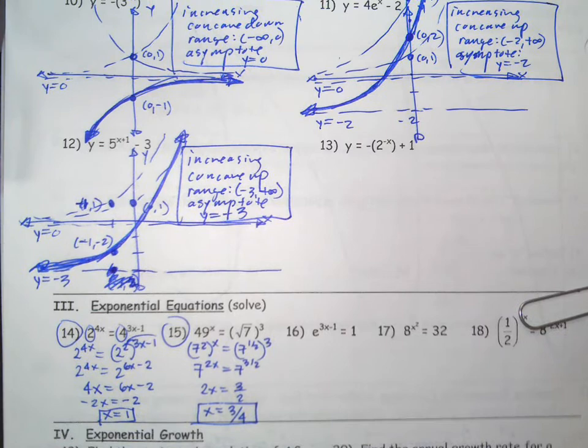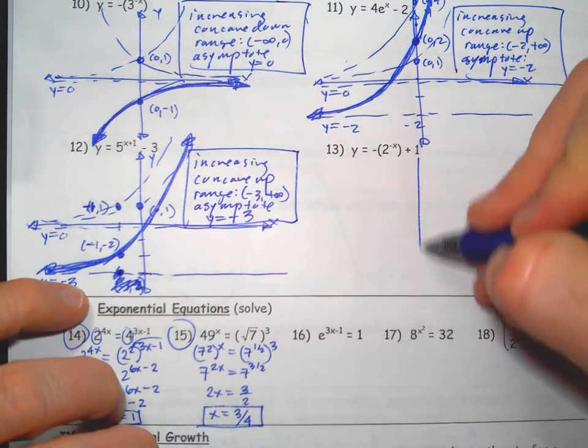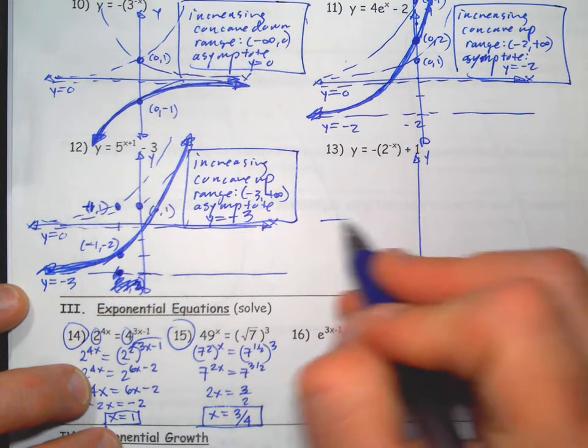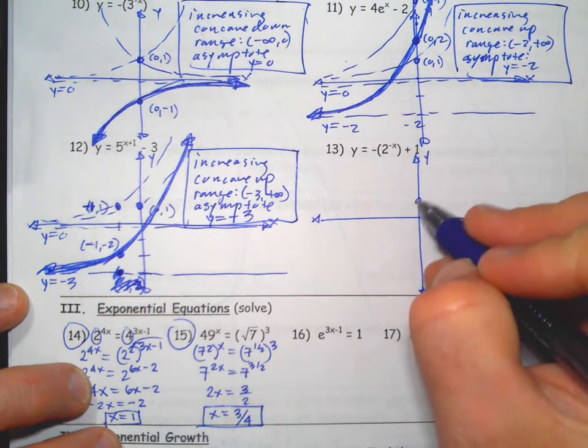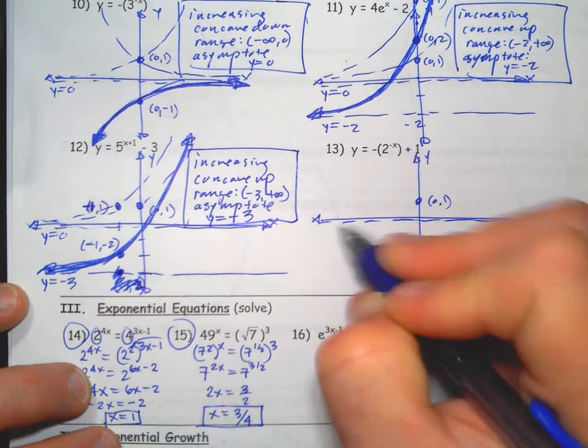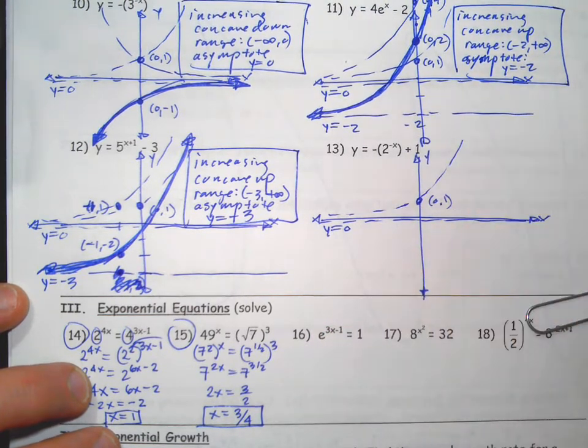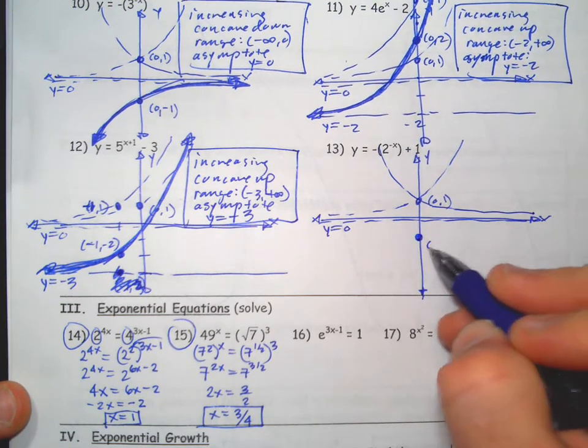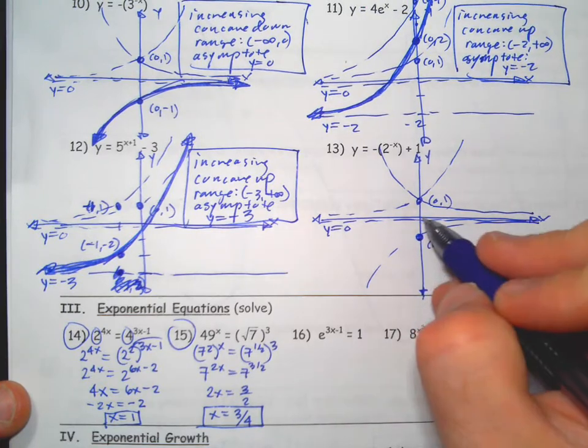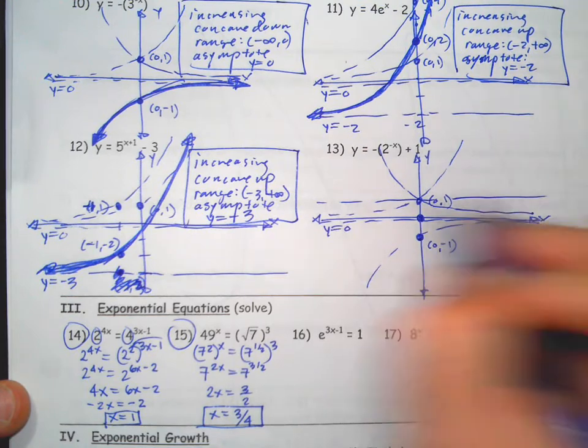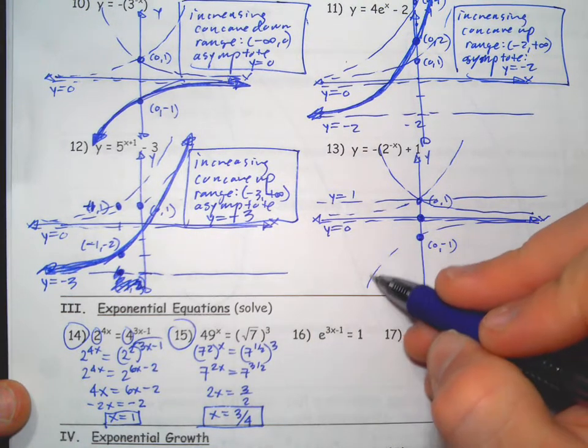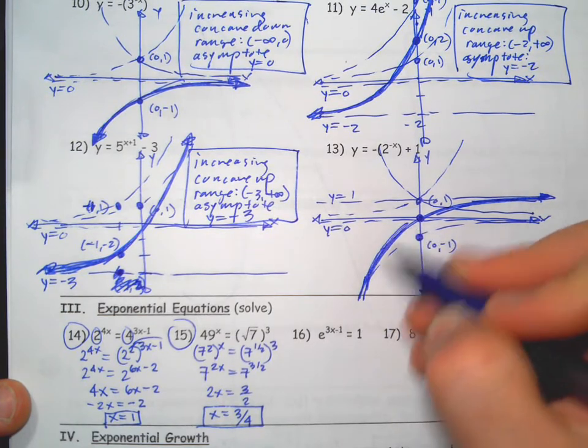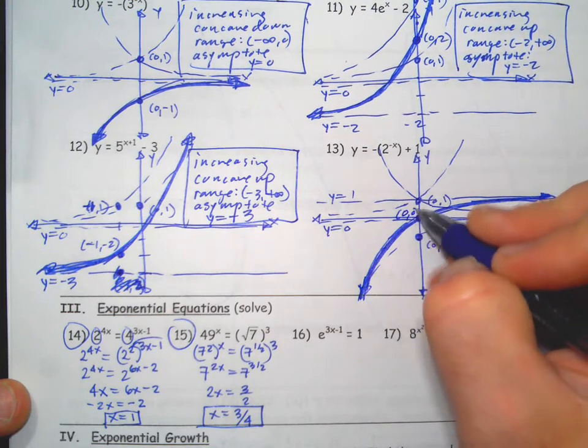Sorry if I sound very relaxed, but I feel like these are super exciting. You guys should find these to be pretty easy, hopefully. So I'm going to start with the parent function like always, y equals two to the x is like that. The negative on the inside flips it left to right. The negative on the outside flips it upside down. Plus one moves everything up one, so something like that.